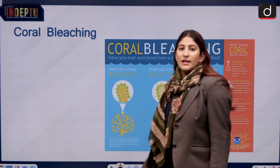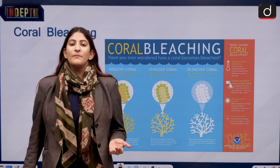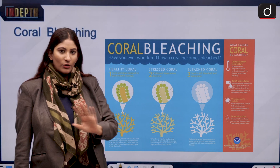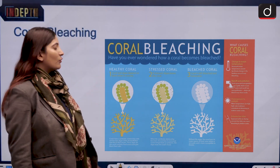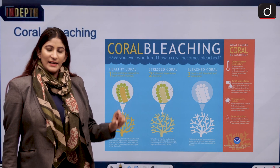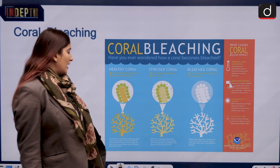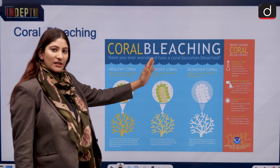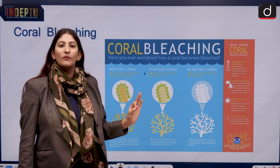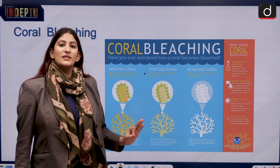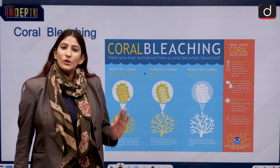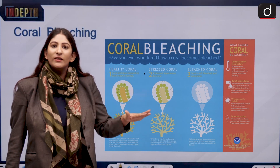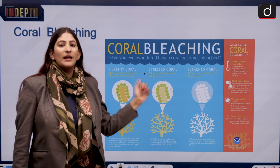Now let's talk about coral bleaching. Coral bleaching is when corals lose their color. A healthy coral is one where polyps and zooxanthellae are living together happily. However, when changes occur — such as temperature change, pollution, degradation of water quality, or eutrophication where excess algae blocks sunlight — the corals become stressed.